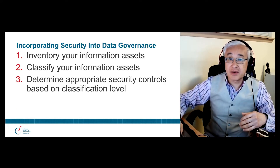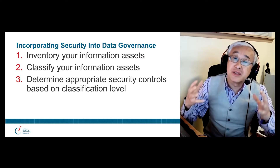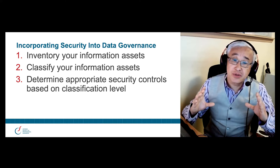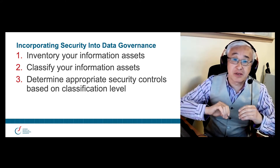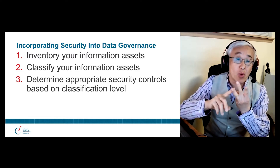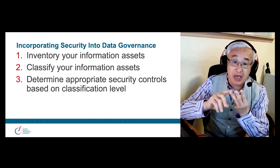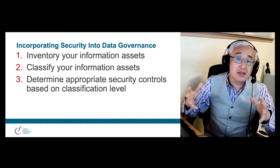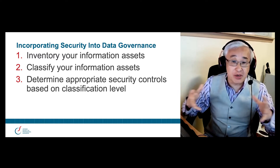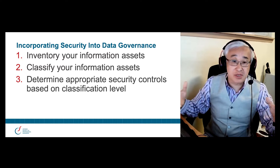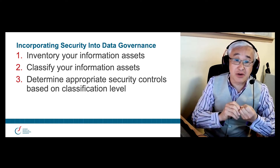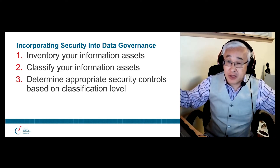Our next slide covers how to incorporate security into data governance. The things you need to do to ensure that security is embedded into data governance are three things. Number one: inventory your informational assets. What that means is if you don't know what kinds of information you have in your environment, in your organization, in your systems, you can't protect them. You can't protect things you don't even know exist. So you need to understand what types of information are in your organization.